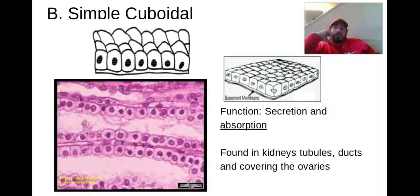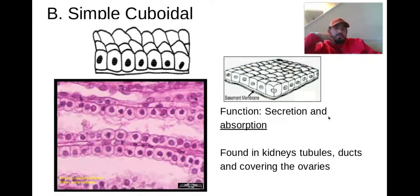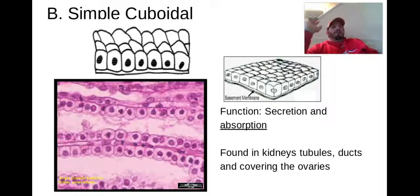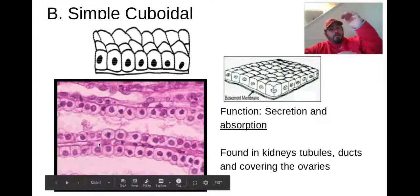Next is simple cuboidal. Simple means one layer, and cuboidal is that square or cube shape. These help with secretion and absorption, and they're found in things like your kidneys — the tubes going into your kidneys — and ducts and coverings to the ovaries. Organs where they're doing some secretion or absorption. Your kidneys absorb salts, nitrates, and other chemicals out of your bloodstream — that's what these simple cuboidal cells are there to do.